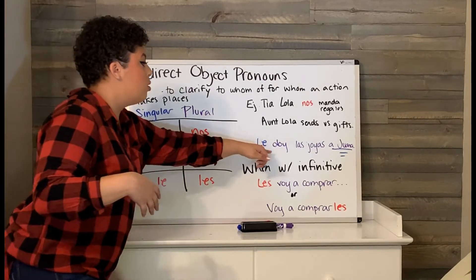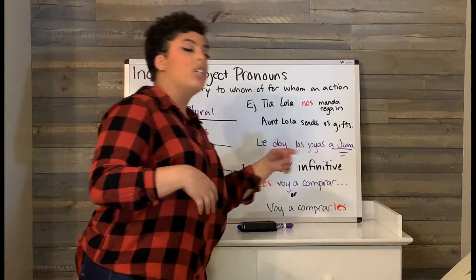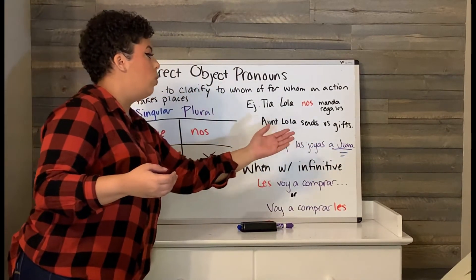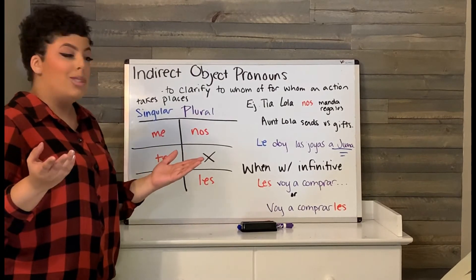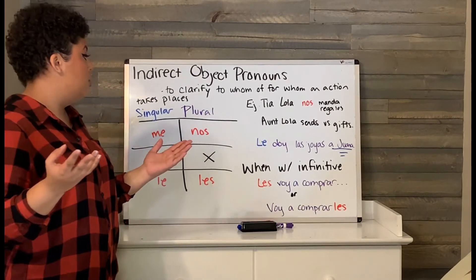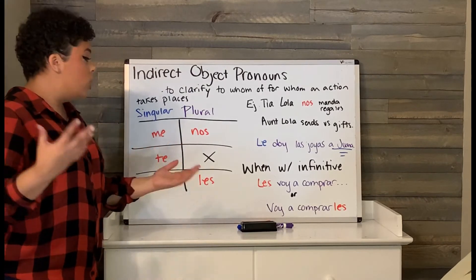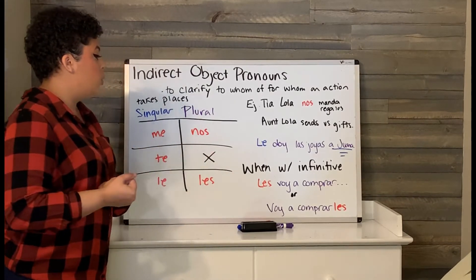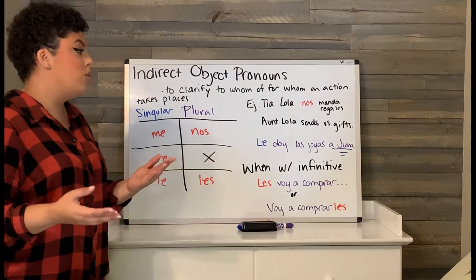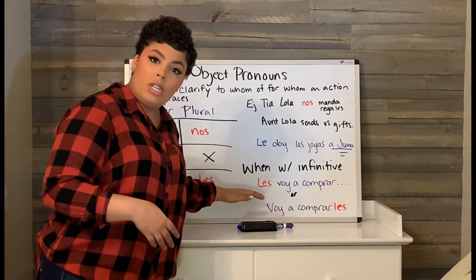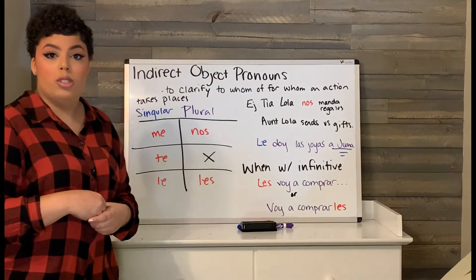So, le doy las joyas a Juana — 'a Juana' — because if you just put 'le doy las joyas,' you don't really know who you're giving them to. Also, when you have indirect object pronouns with an infinitive, same as direct object pronouns, you can either put it at the beginning or tag it to the end of your second verb.